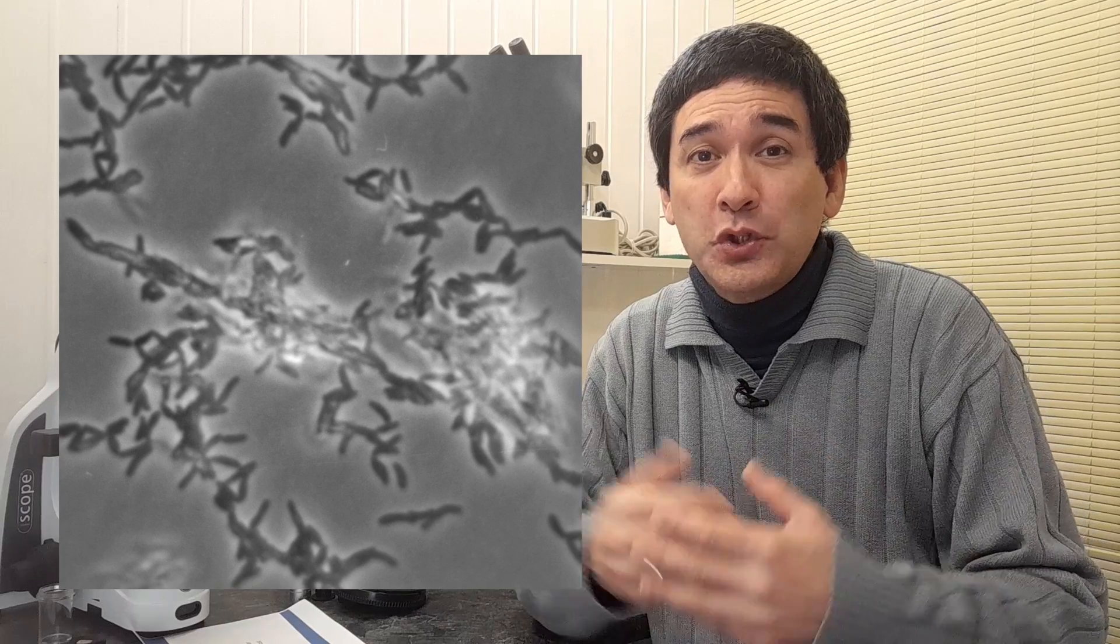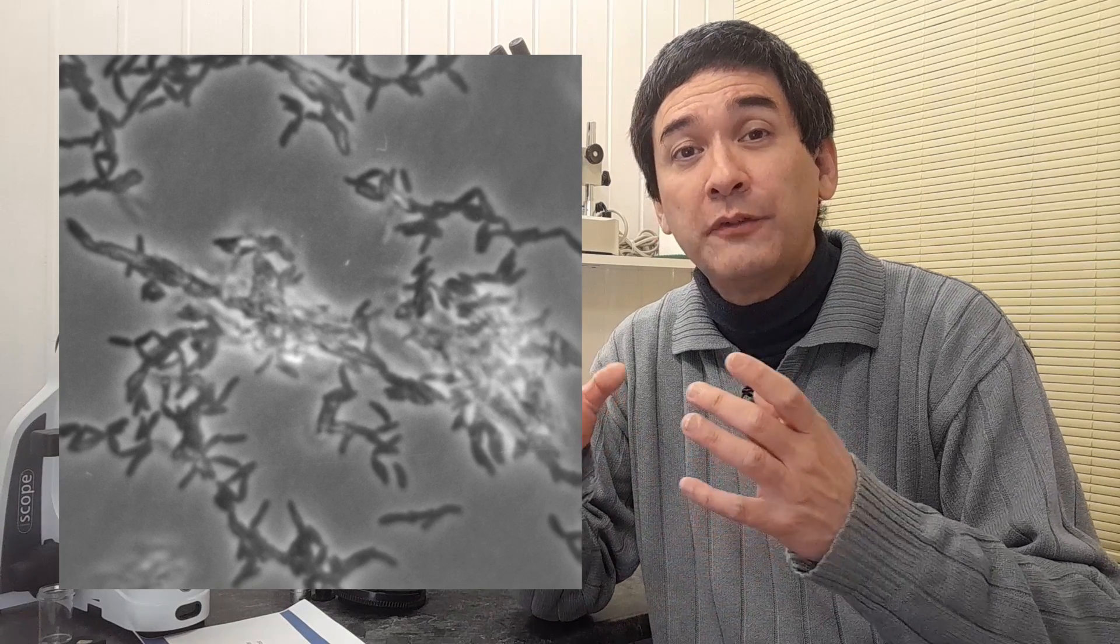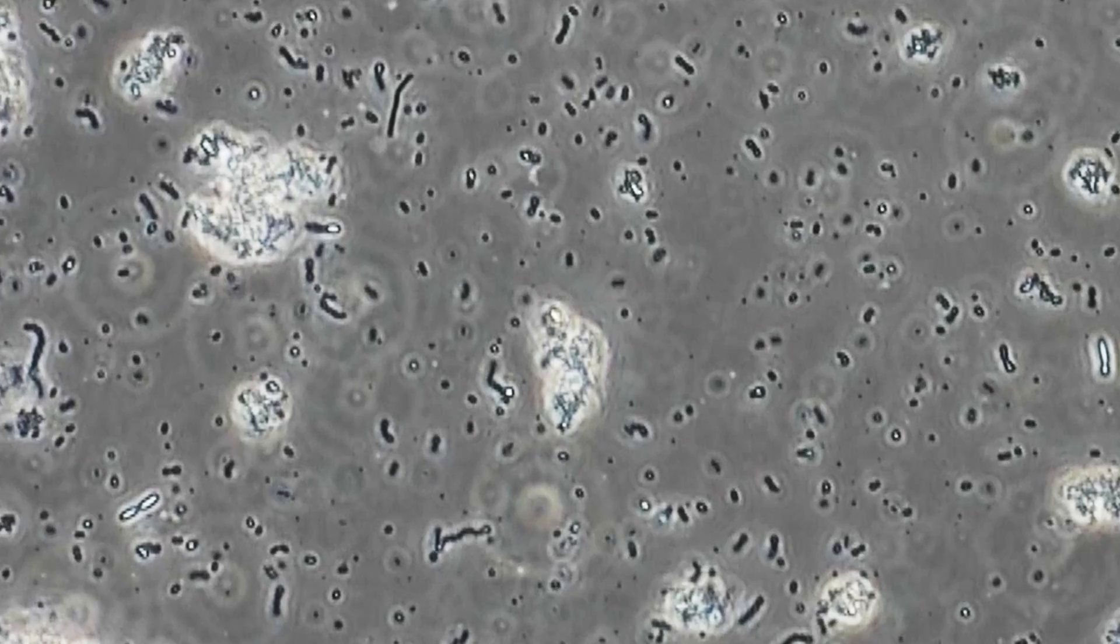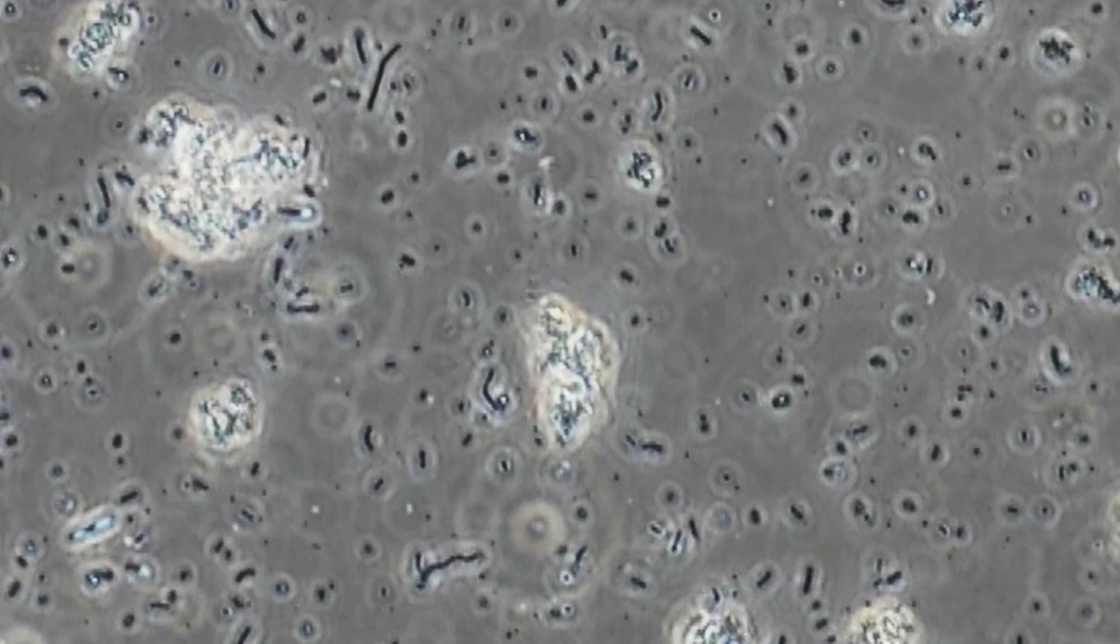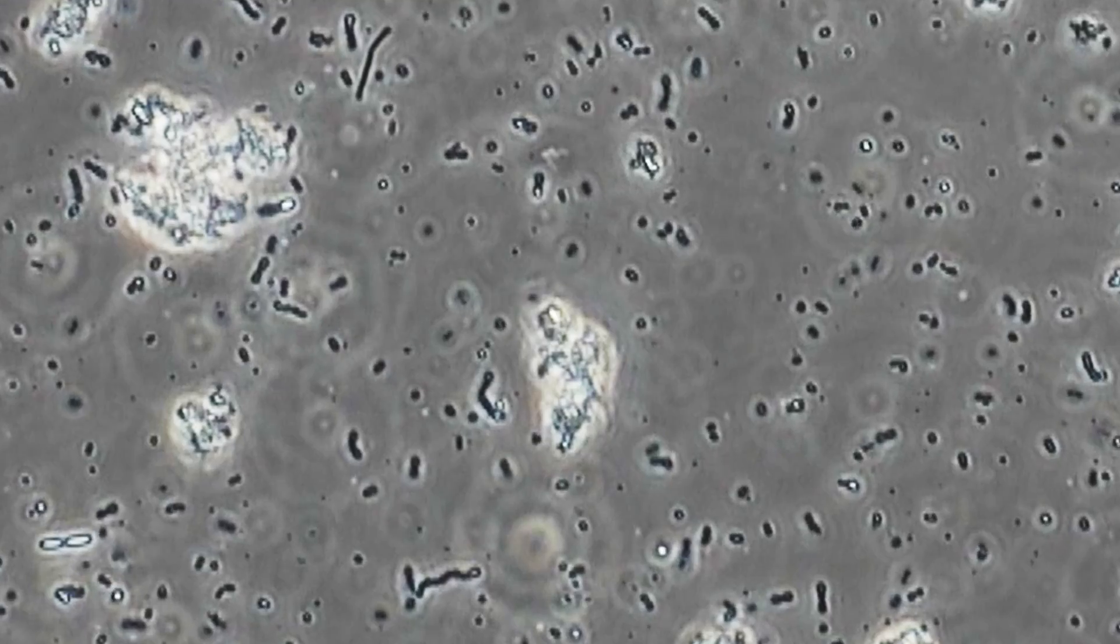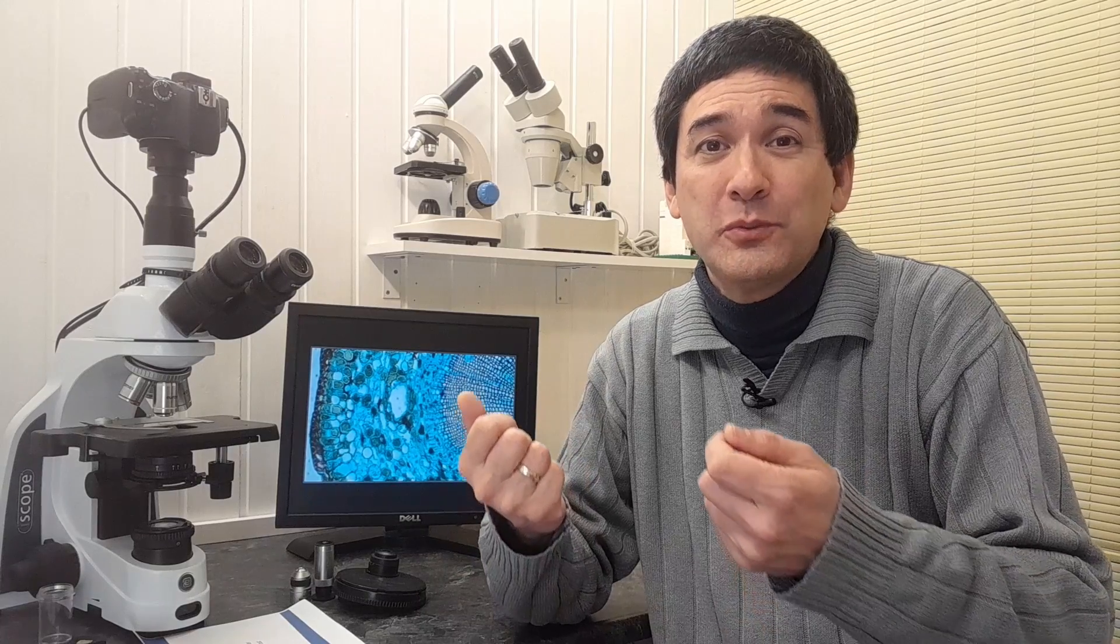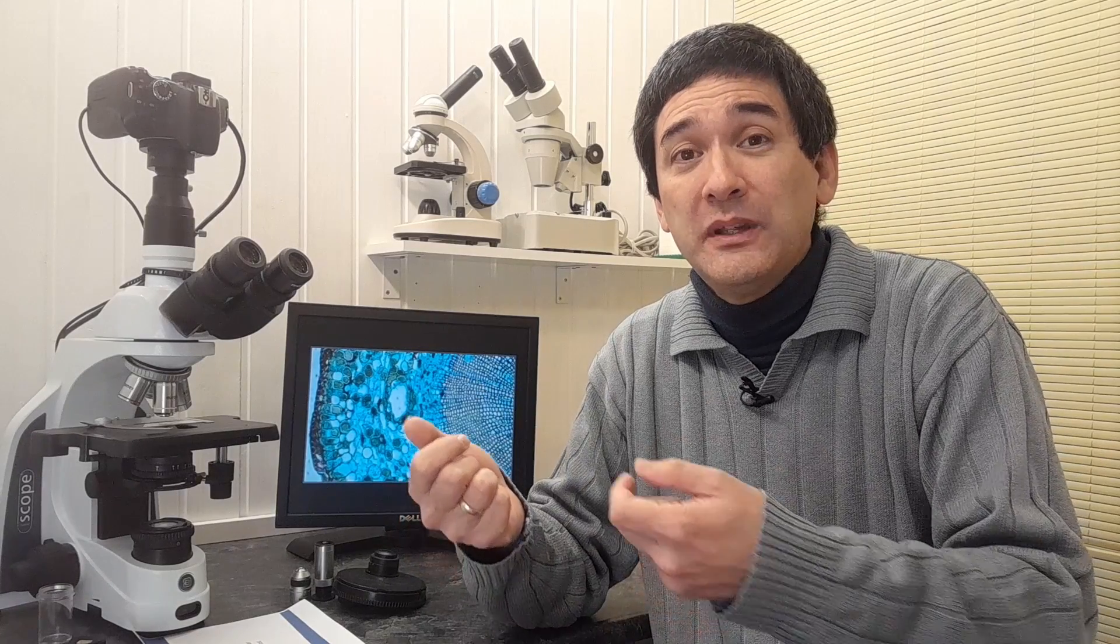But phase contrast microscopy will convert the differences in so-called refractive index of the specimen, that's the of the bacteria, of the cells, into a difference of brightness. So in other words, we're able to see difficult to observe objects easily without having to use chemical stains.